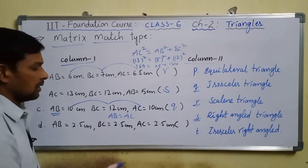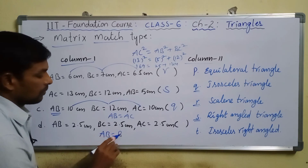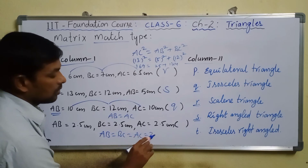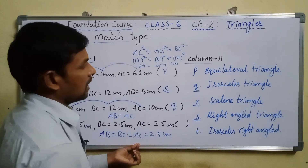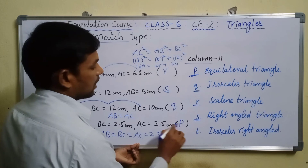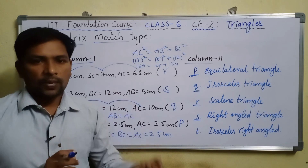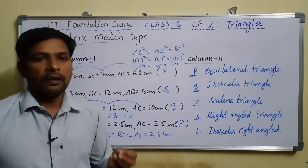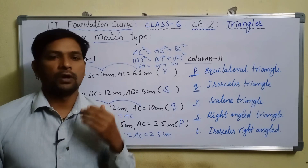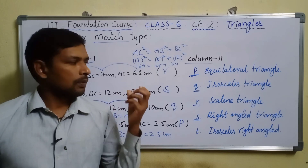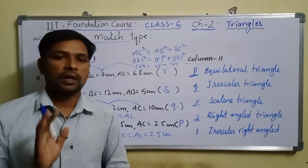Item D: AB = BC = AC = 2.5 cm. All three sides are equal in length, so this is an equilateral triangle, matching option P. This completes the multi-correct, comprehensive, and matrix match type models. In the next video we will discuss synopsis 2 of chapter 2. Please watch all previous videos of chapters 1 and 2. Thank you very much.